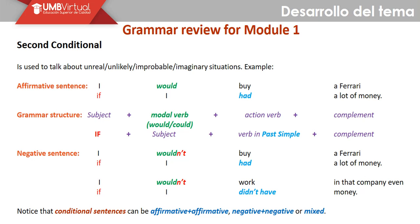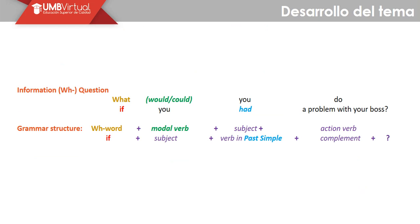'I wouldn't work in that company even if I didn't have money.' Si yo no tuviera dinero, aún así no trabajaría en esta compañía. Entonces vemos los diferentes usos — sabemos que podemos negar en las dos partes de la oración. Recordemos que el 'if' expresa la condición, es decir la causa, y posteriormente tenemos la consecuencia. Conditional sentences can be affirmative, negative, plus negative, or mixed — oraciones afirmativas, positivas, o podemos mezclar. Sí, es completely OK.